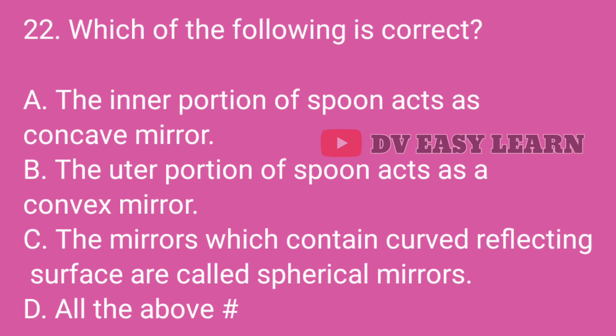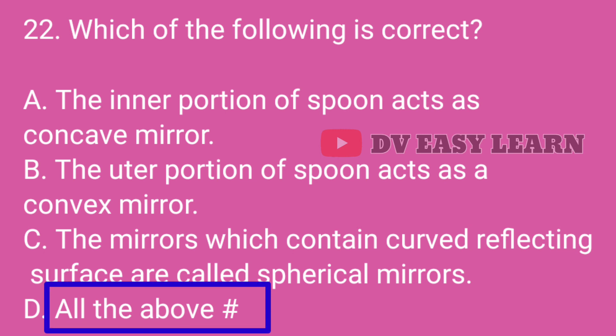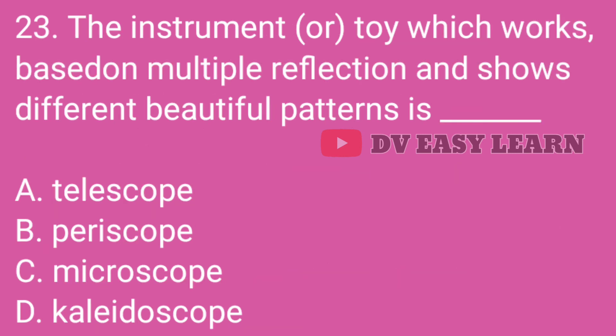Question No. 22: Which of the following is correct? Correct answer: All of the above. The inner portion of the spoon acts as a concave mirror, the outer portion of the spoon acts as a convex mirror, and the mirrors which contain curved reflecting surfaces are called spherical mirrors.